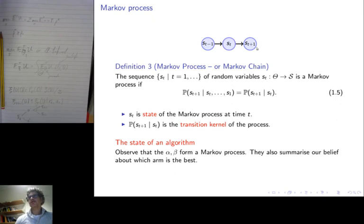So that means that st plus 1 is conditionally independent of all previous variables when st is given. In the Markov process we call st the state of the Markov process at time t, and call this distribution, the conditional distribution of st plus 1 given st, the transition kernel of the process.